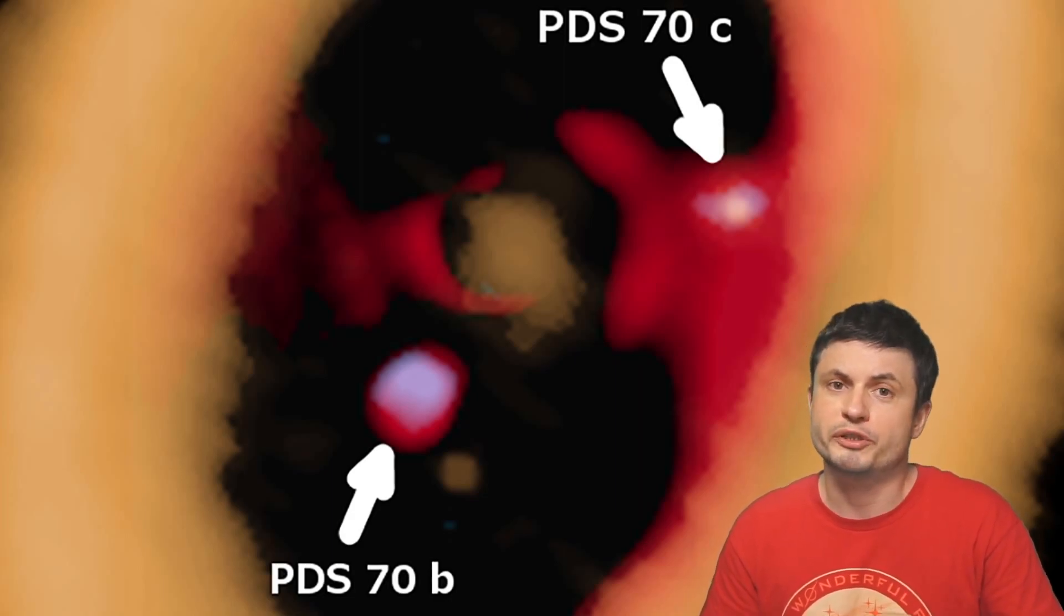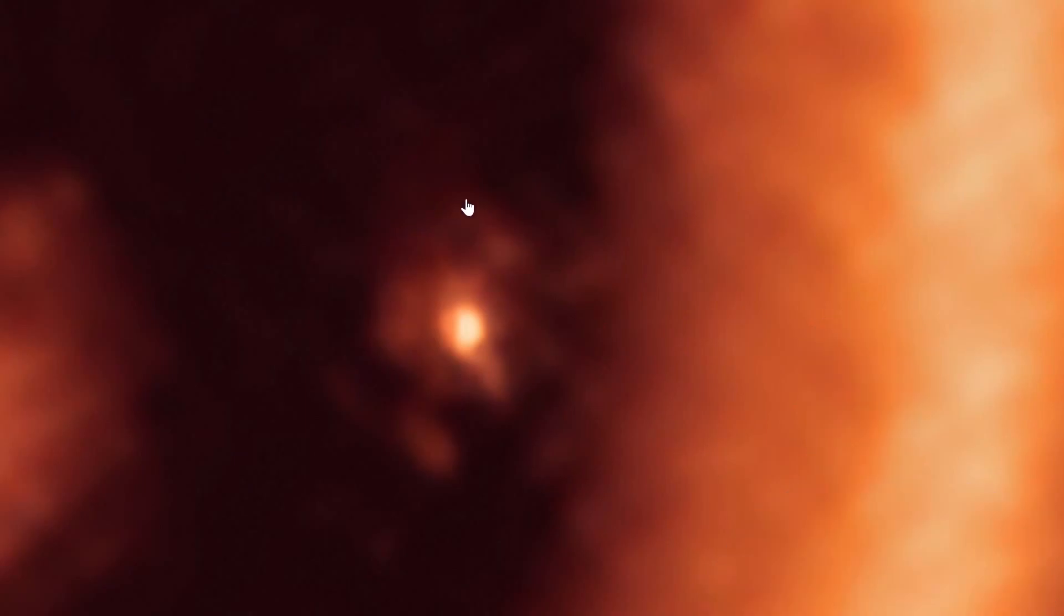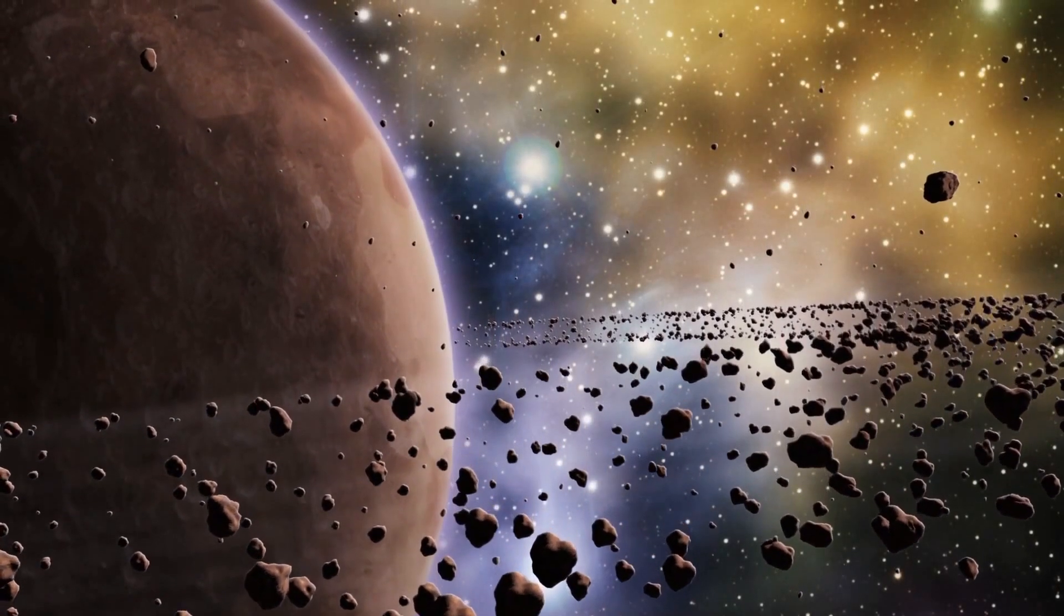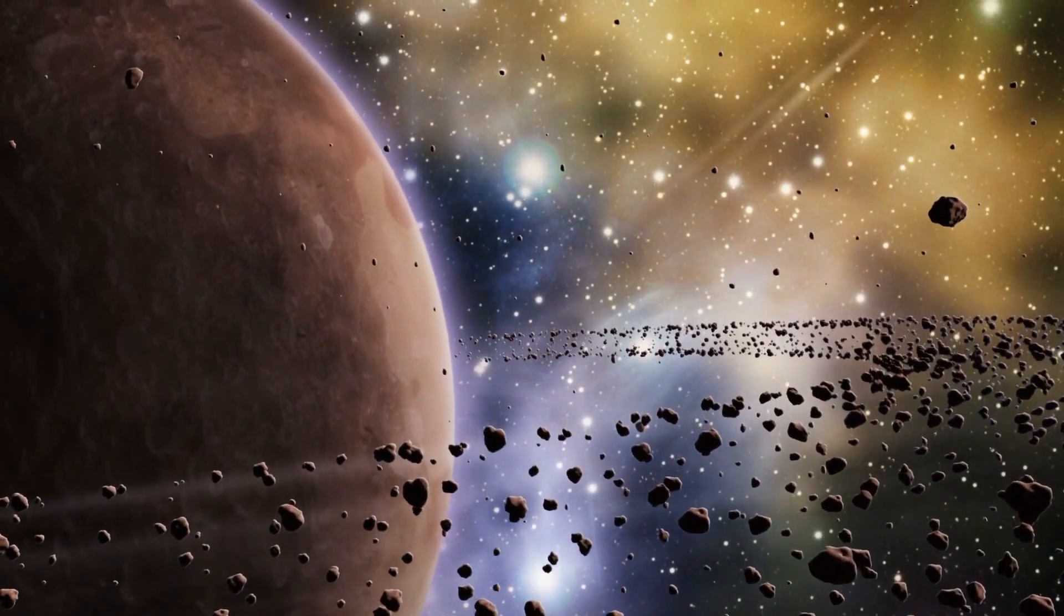The new observations came out very recently and showed us something with much more clarity and detail. When zooming in on PDS-70C, it allowed scientists to clearly identify what seems to be a circumplanetary disk, a disk from which we believe moons are formed. If we were to imagine what all this looks like, this is maybe what we would see. This is just an artistic representation.